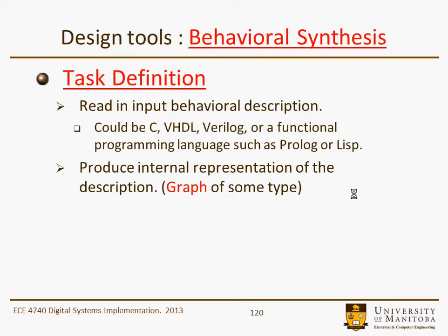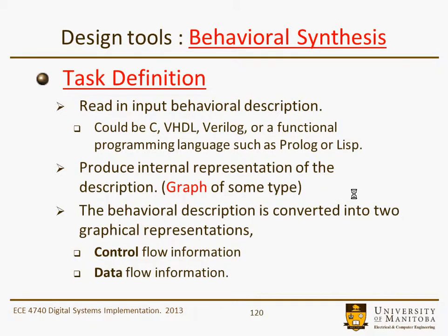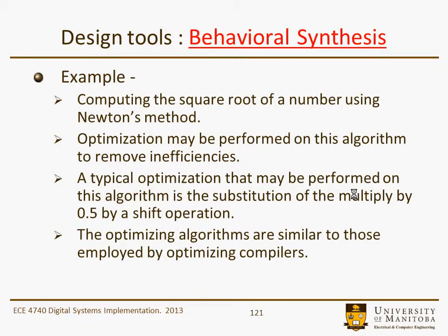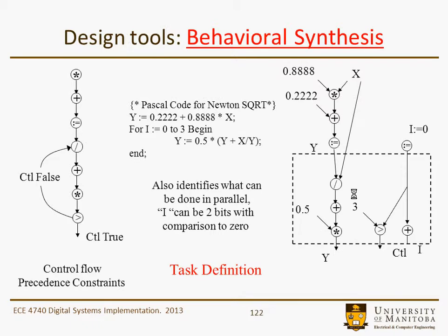For task definition, you read an input behavioral description — could be in C, VHDL, Verilog, or some other language — and produce an internal representation, which is going to be a graph of some type. The design is then converted into two graphical representations: control flow information and data flow information. Here's a simple example of computing the square root of a number using Newton's method. Some optimizations may be performed — for instance, multiplication by 0.5 becomes a simple shift operation, which is simpler than multiplying. These optimizations are similar to those found in an optimizing compiler.